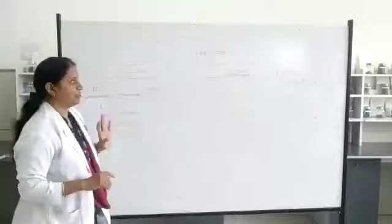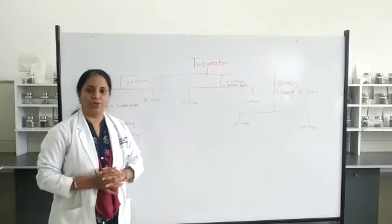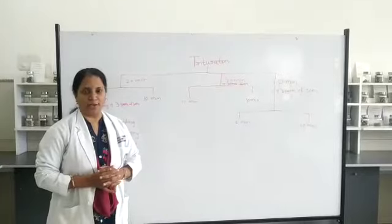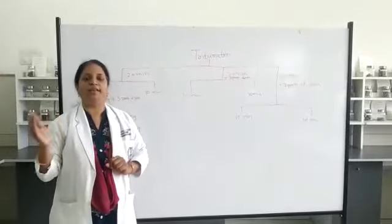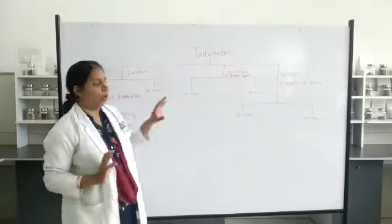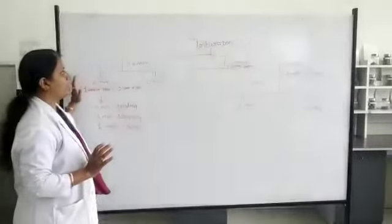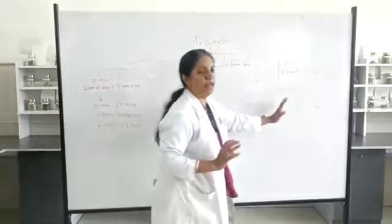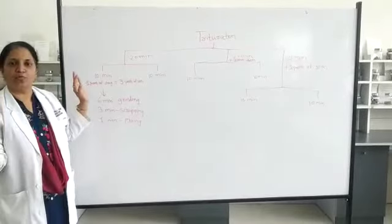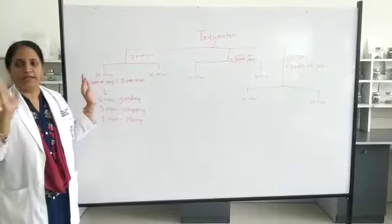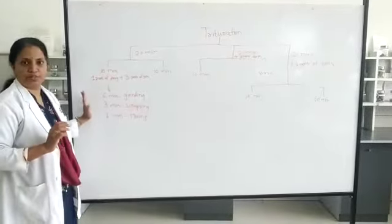The substances required are crude sulphur and sugar of milk. We are going to triturate on the decimal scale, so the ratio will be 1:9 — that is, 1 part of sulphur and 9 parts of sugar of milk. The entire process of trituration of 60 minutes is divided into three phases of 20 minutes each. For the first phase you are going to take 1 gram of sulphur and 3 grams of sugar of milk into the mortar.